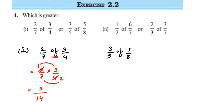The second number is 3/5 of 5/8 — 'of' means multiplication. We can cancel 5 and 5. So we're left with 3 in the numerator and 8 in the denominator, giving us 3/8. Now we have to compare these two numbers.